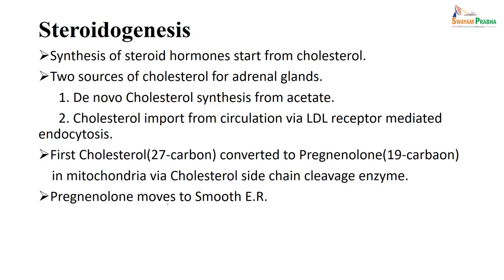How does steroidogenesis take place? Steroids have a perhydrophenanthrene ring chemical structure, and are basically synthesized starting from cholesterol. There are two sources of cholesterol in the adrenal gland: one is de novo synthesis — cholesterol synthesis from acetate — and the second is import from circulation via LDL receptor-mediated endocytosis. So the first cholesterol, that is 27 carbons, is converted into pregnenolone, that is 19 carbons, in the mitochondria, via the cholesterol side-chain cleavage enzyme.